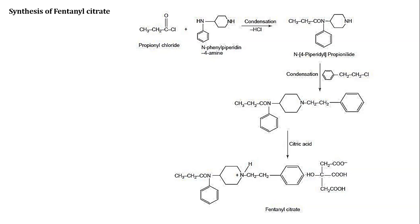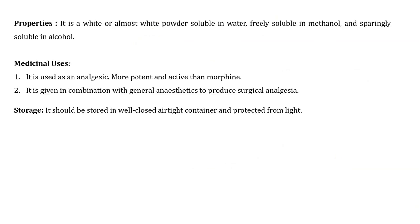Next is the synthesis of fentanyl citrate. It is a mu agonist with high lipophilic character and can easily cross the blood-brain barrier and enter the central nervous system. It can be prepared by condensation of propionyl chloride and N-phenylpiperidine-4-amine, resulting in the synthesis of propionanilide. Further, propionanilide is condensed with chloroethylbenzene resulting in a new intermediate. This intermediate is further treated with citric acid, resulting in the synthesis of fentanyl citrate. It occurs as a white crystalline powder, freely soluble in water or methanol and sparingly soluble in alcohol.